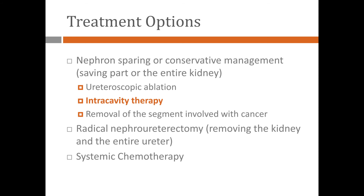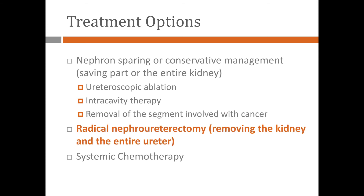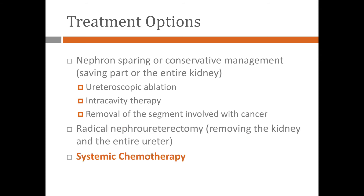In some cases, depending on the location of the tumor, we remove part of the ureter to get rid of the cancer. The second category of treatments is for more advanced disease — locally advanced disease — where we have to remove the kidney and the ureter. And for more metastatic or locally aggressive disease, we need to use chemotherapy.